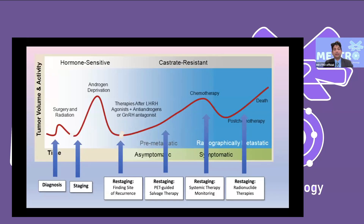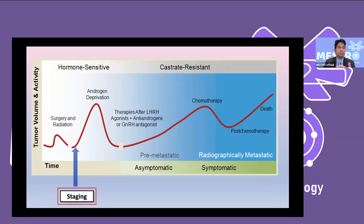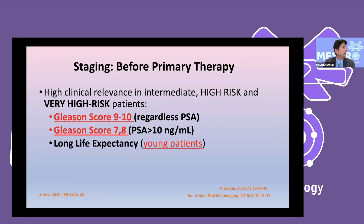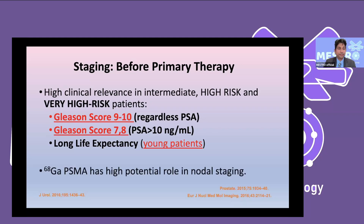PSMA PET-CT plays a role across the entire prostate cancer treatment cycle — from hormonal-sensitive disease to castration-resistant disease. For staging, it is highly relevant in intermediate, high, and very high risk groups, especially with Gleason score 9–10 or 7–8, high PSA, or younger patients with long life expectancy. While MRI remains the modality of choice for primary staging to assess capsular invasion and neurovascular bundle involvement, PSMA adds high value in nodal staging.